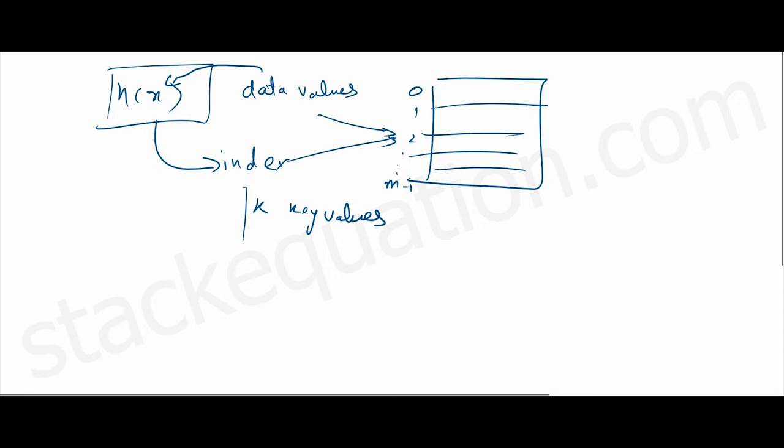Let's say we have k key values and we want to find the index for each of these key values. For that we need to define a hash function which will help us to find the index where these values will be stored.